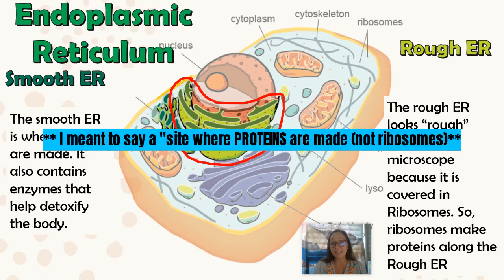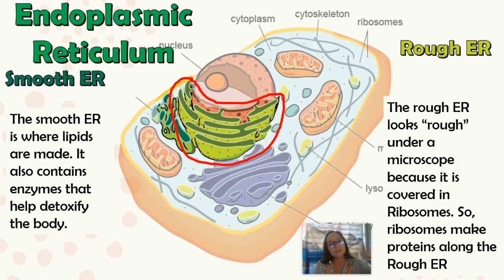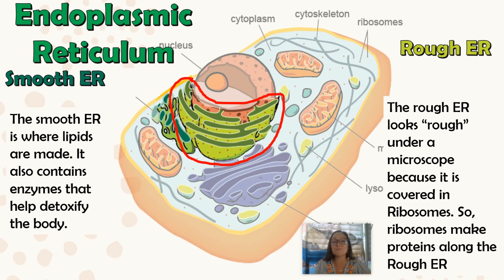The rough ER gets its name because when scientists first looked at it under the microscope, it looked rough. Years later they discovered that the bumps on the rough ER were actually ribosomes making proteins.